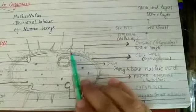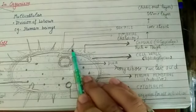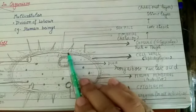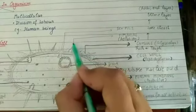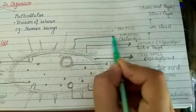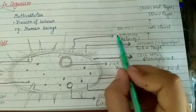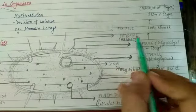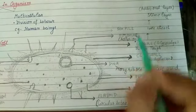Two types of projections - those which are smaller in size are known as fimbriae. Fimbriae help in adhesion, meaning they help the bacteria stick to a surface.